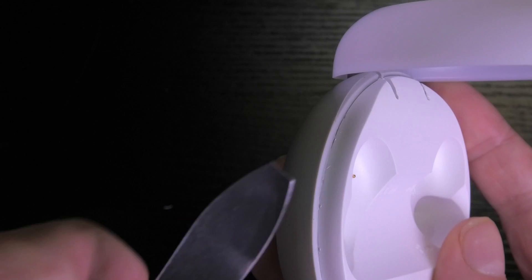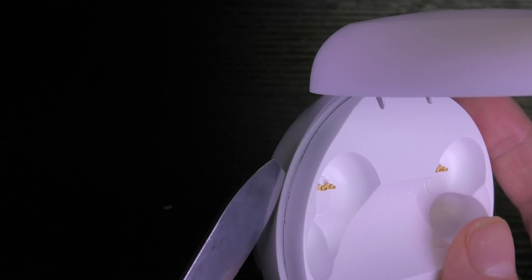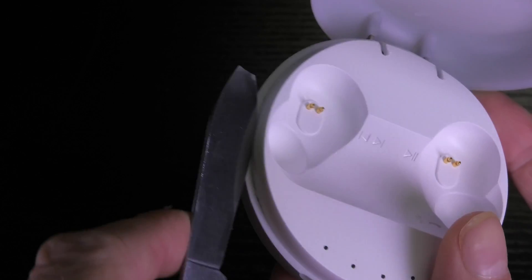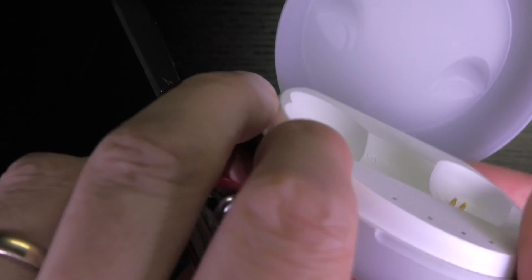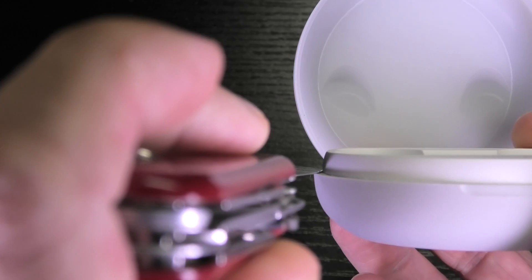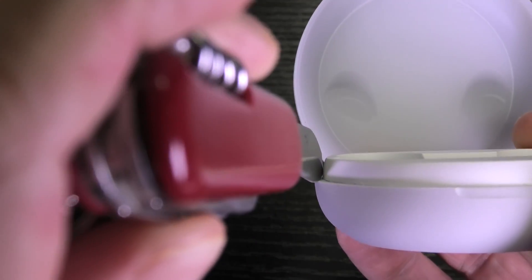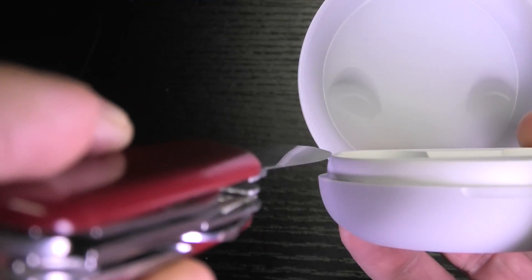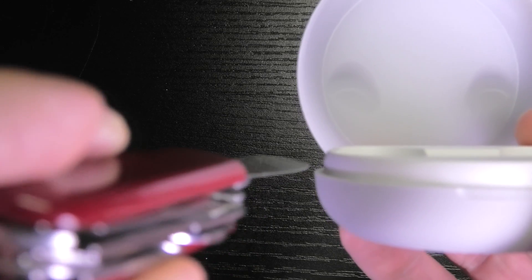And here with the JBL3 I am just going to take my pocket knife and I am trying to wedge this in between the two pieces of the charging case. So this is here the grey bottom and the white top.